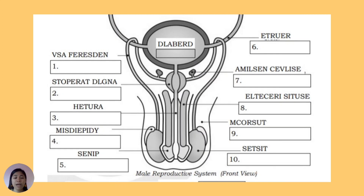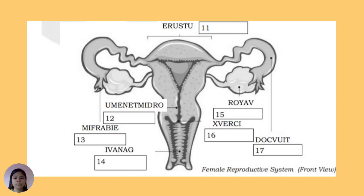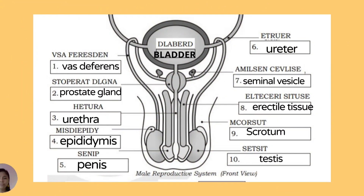Male reproductive system, front view — correct answers: bladder, then number 1 vas deferens, 2 prostate gland, 3 urethra, 4 epididymis, 5 penis, 6 ureter, 7 seminal vesicle, 8 erectile tissue, 9 scrotum, and 10 testes.